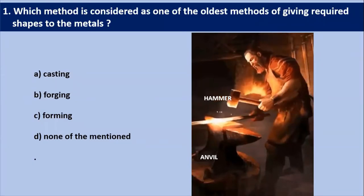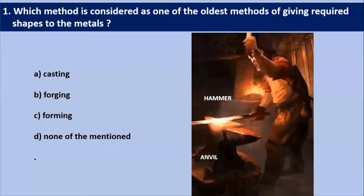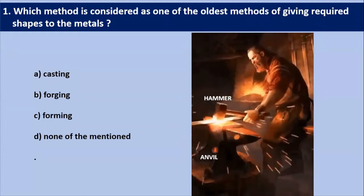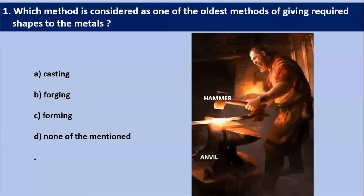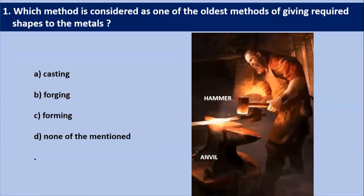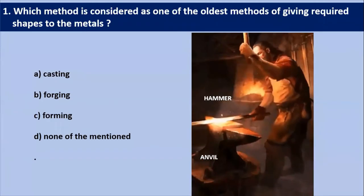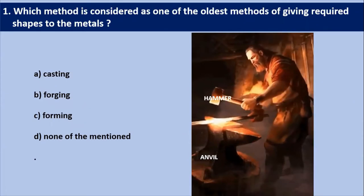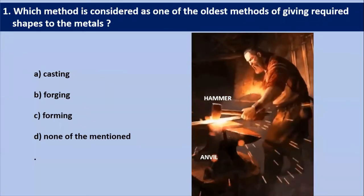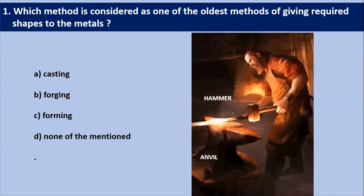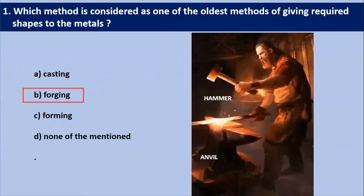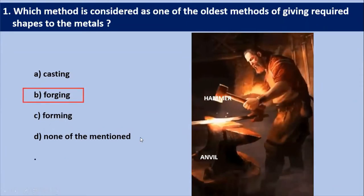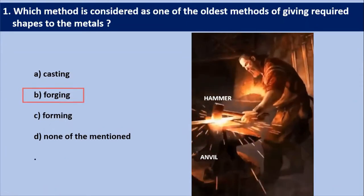Which method is considered one of the oldest methods of giving the required shape to metal? Experts consider forging as the oldest method. For a long time, forging was used by the smith with a hammer. After that, this method came into picture in industries. So the oldest method is forging, as compared to casting, forming, or none of the above. Our answer is forging.